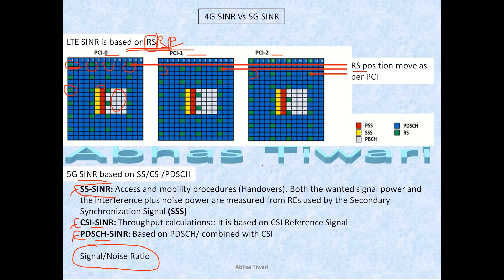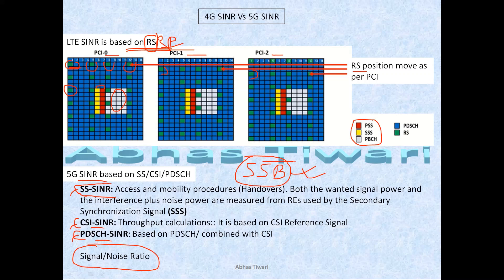So now we have SS-SINR. To understand SS-SINR, the SSB consists of your PSS, SSS, and PBCH. In 5G, all three together are known as SSB. The position of SSB does not change regardless of any PCI value or any other factor — it always stays in the same position. As we saw in LTE, position change makes the network less susceptible to interference, but here the position is fixed. This particular SINR is generally used for access and mobility only.